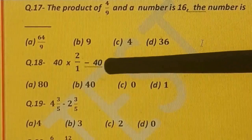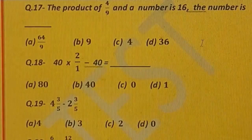Question number 18. 40 multiplied by 2 upon 1 minus 40 is equal to dash. Options are: A) 80, B) 40, C) 0, and D) 1.